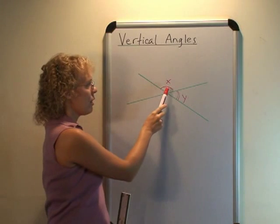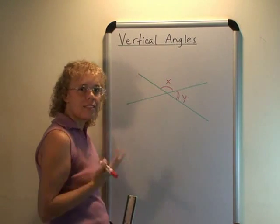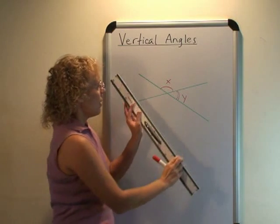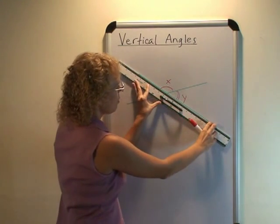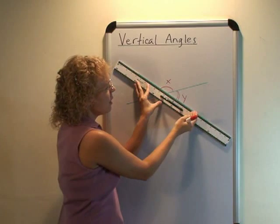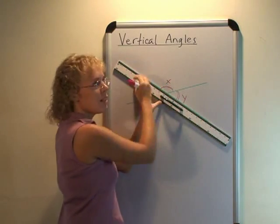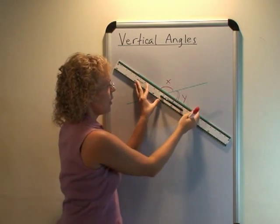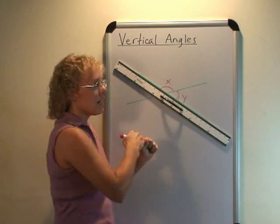First of all, let's call this angle x, it's x degrees. This angle y, y degrees, and if you look at this line, these two angles here add up to 180 degrees or to a straight angle. This plus this must be 180.